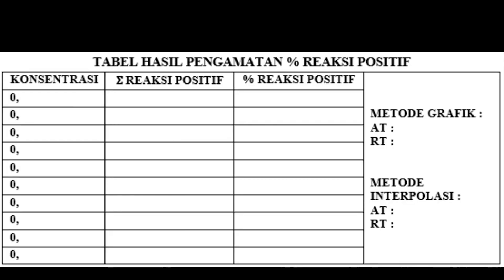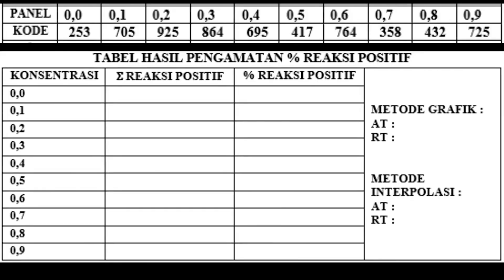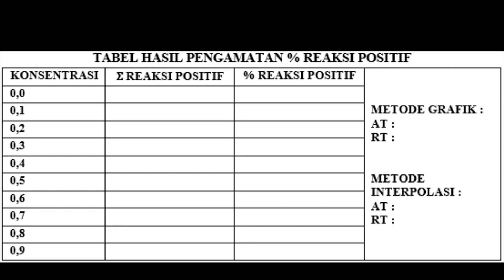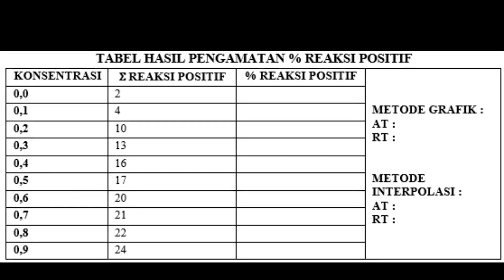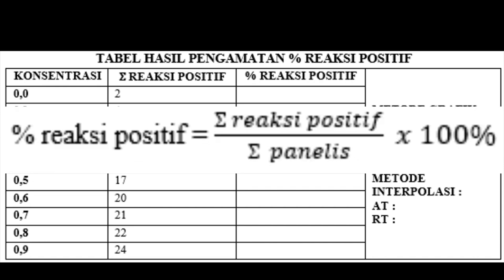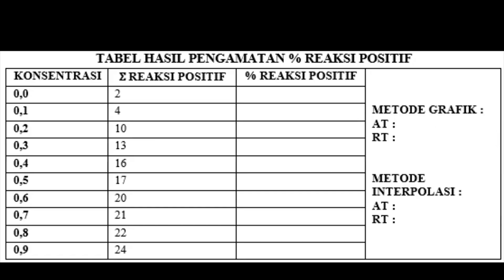Pada bagian tabel persen reaksi positif, kita input data konsentrasi. Kita telah mengetahui konsentrasi dari masing-masing kode sampel, tinggal di-input saja. Pada konsentrasi 0,0 ada 2 jumlah reaksi positif, pada konsentrasi 0,1 ada 4 reaksi positif, dan seterusnya. Kemudian, kita isi persen reaksi positif dengan rumus: persen reaksi positif = jumlah reaksi positif dibagi jumlah panelis dikali 100%. Contoh: pada konsentrasi 0 dengan jumlah reaksi positif 2, dibagi 24, kemudian dikali 100%, hasilnya adalah 8,33.